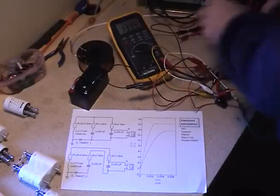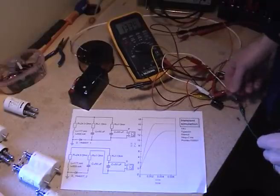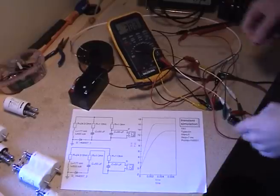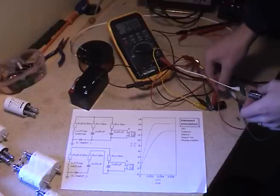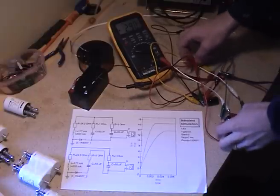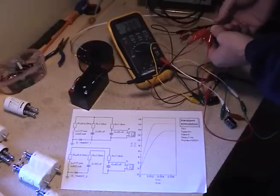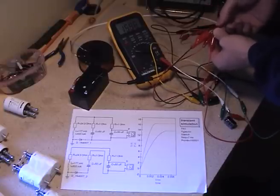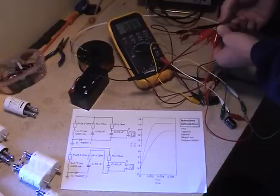Let's do this with the capacitors in series instead. Okay, now the capacitors are in series. I'll use the spike to charge them again - 16 volts. Short it out.